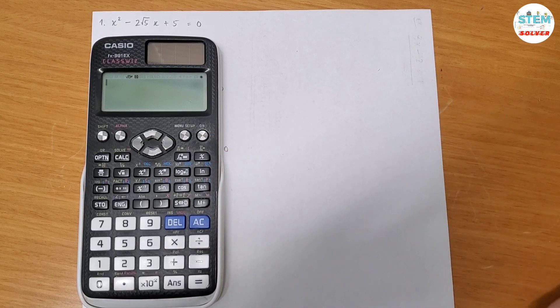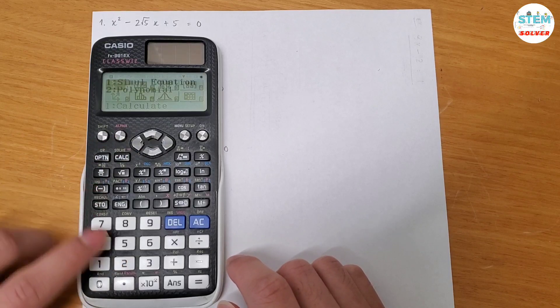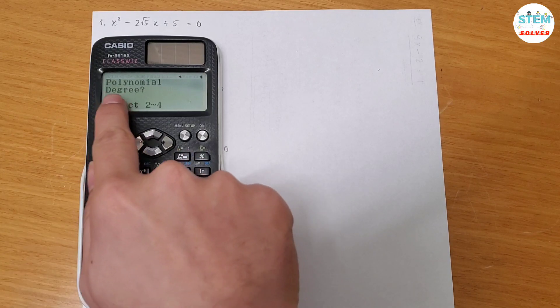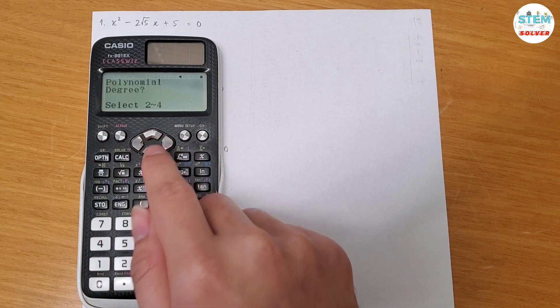So on this type of calculator, you hit setup, alpha, A, 2, and then set a polynomial degree. So in this case, I have a quadratic polynomial, so I hit 2.